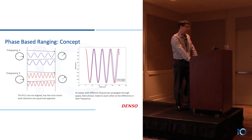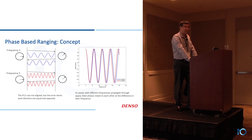Immediately after that step is completed — which is one of the phase-based ranging steps — there would be a frequency change time between the red and the blue, and then the process is repeated on a different frequency.